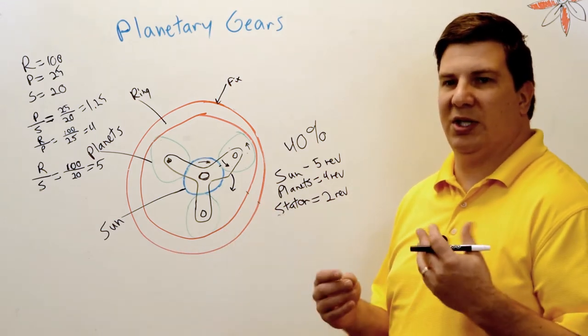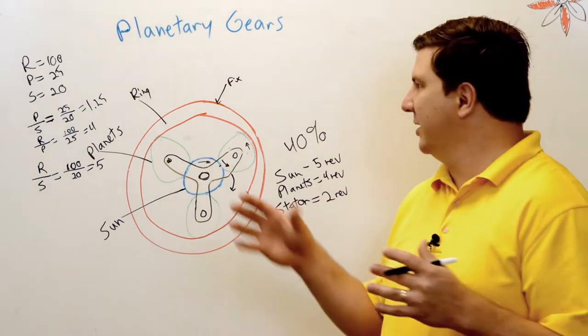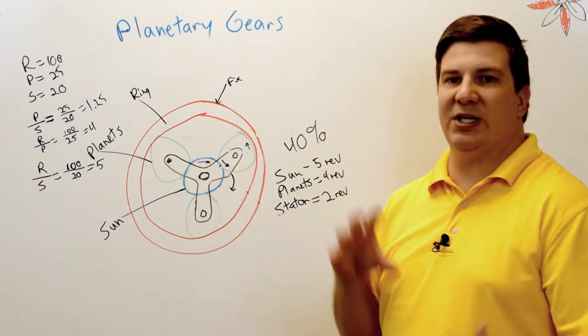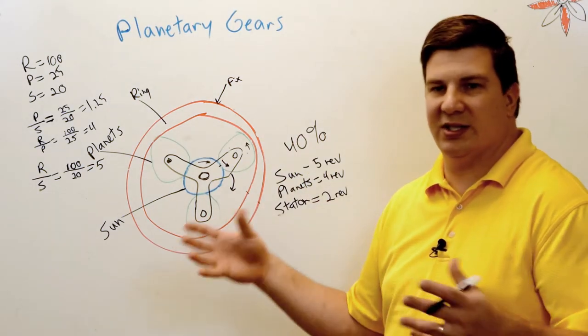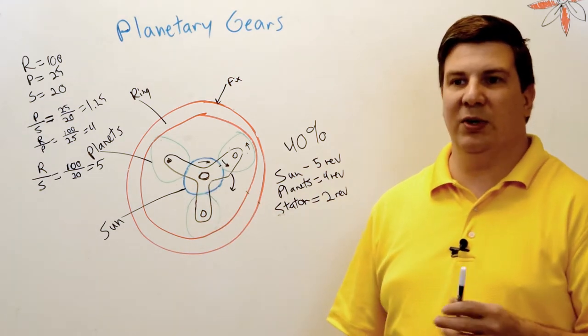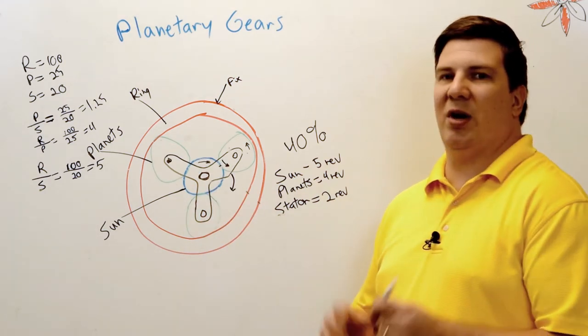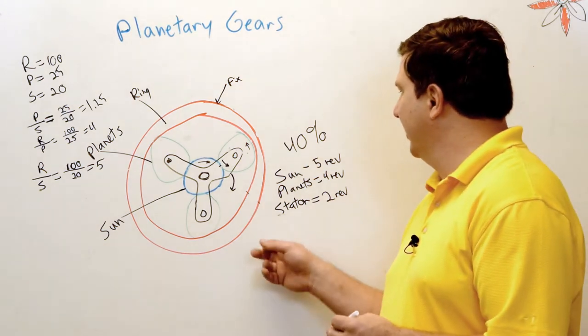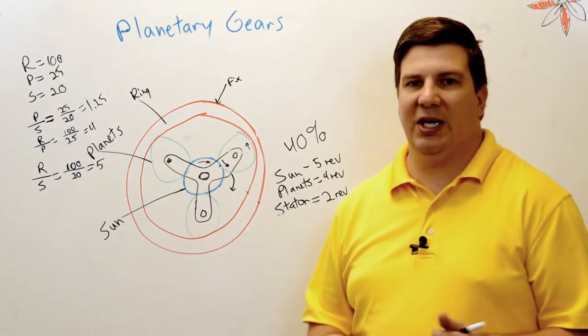You can have immensely reduced speed ratios, you know, like 100,000 to 1, just by using several of these in a row. You can have two different size rings tied together with two different planets and stuff like that, where you can get astronomically high torque ratios and other things with these.